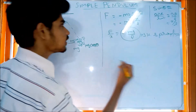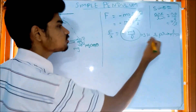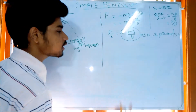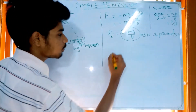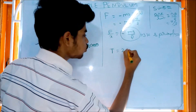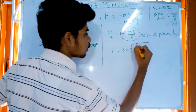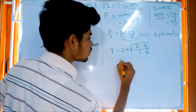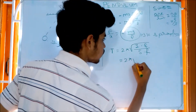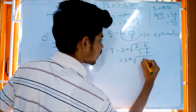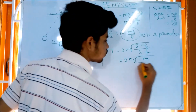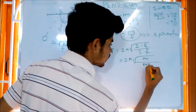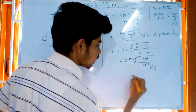So we have minus mg by L, which means this acts as the spring factor. From the previous video, the time period is 2 pi root of inertia factor by spring factor. The inertia factor is mass M, and the spring factor is mg over L. Substituting, M and M cancel.